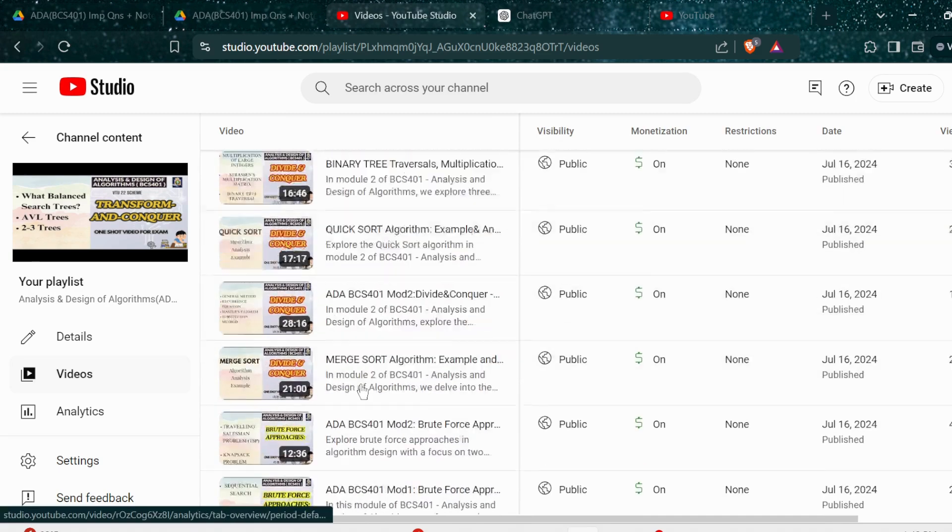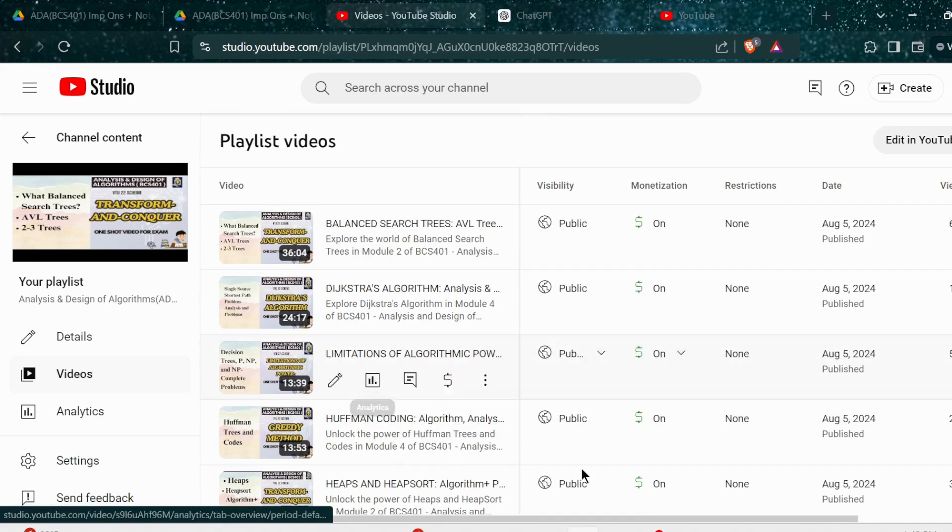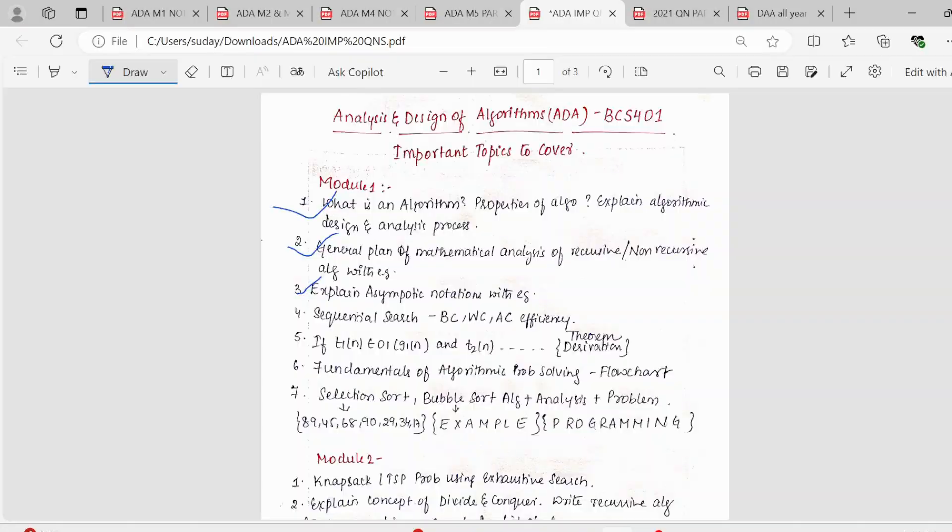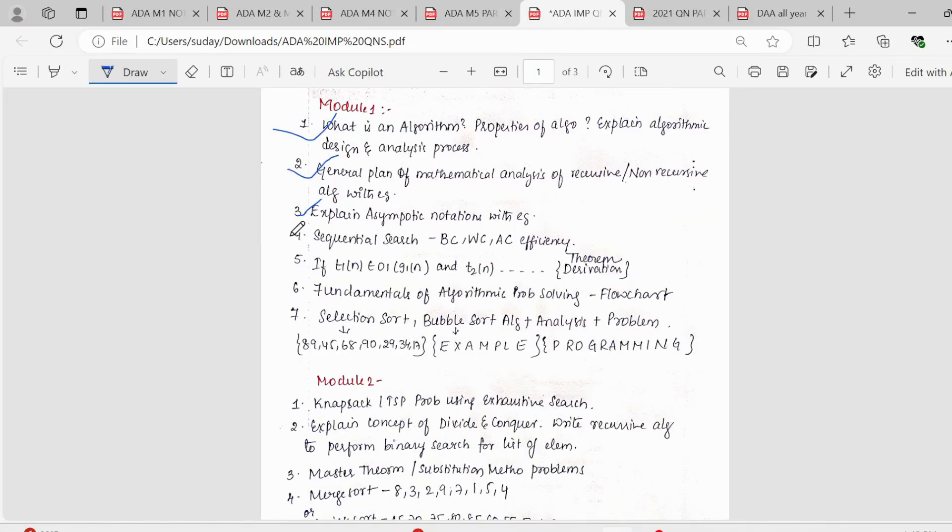So make sure you watch all these videos. I have explained it with example analysis, everything from example perspective. Next we have sequential search - what is the best case, worst case and average case efficiency. Then we have this theorem. This theorem is a must, it has asked for 10 marks. Then we have what are the fundamentals of algorithmic problem solving, a flowchart. So this is again an important question.